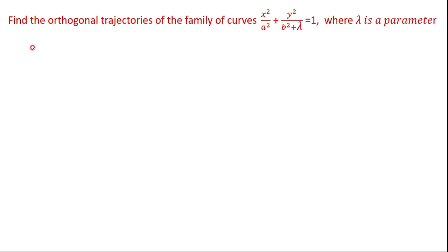Orthogonal trajectories means that if we have the family YF1 and another family YF2, and if every member of the family YF1 is orthogonal to every member of the family YF2, then these two families are called the orthogonal trajectories of each other.